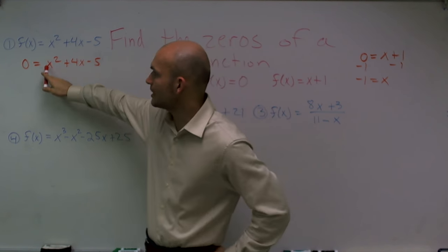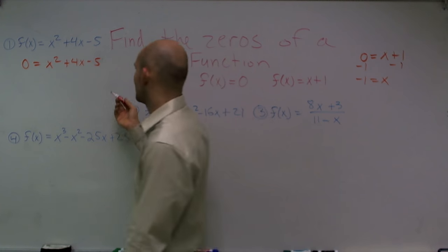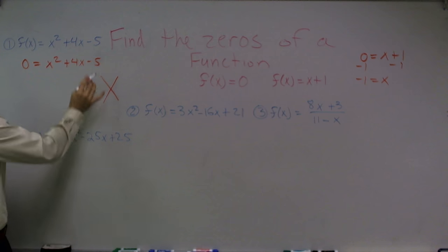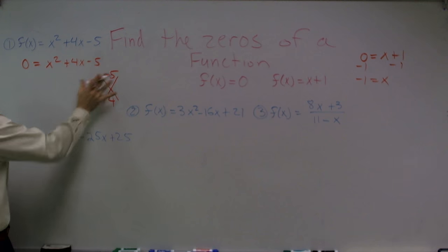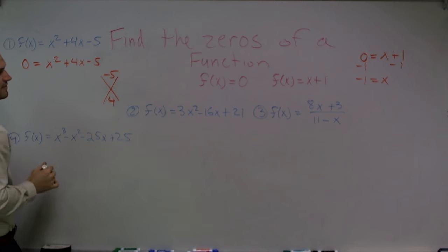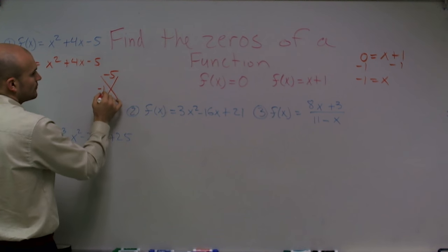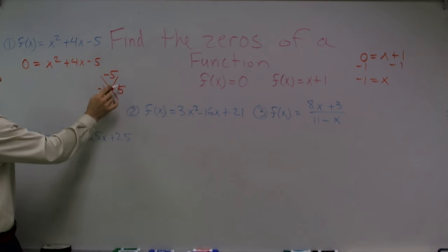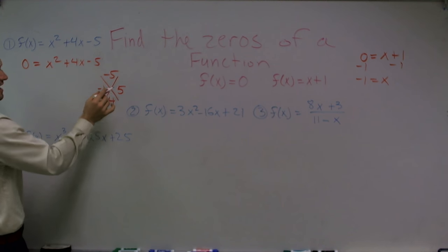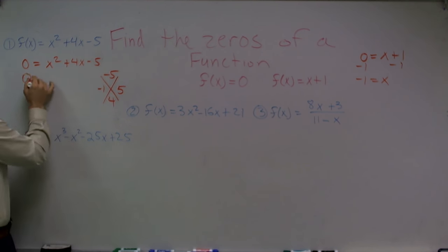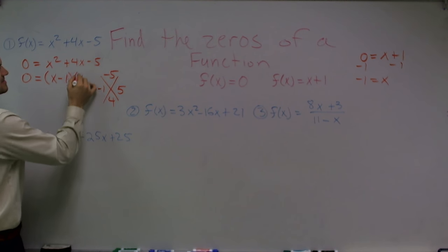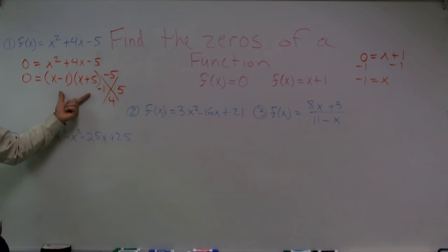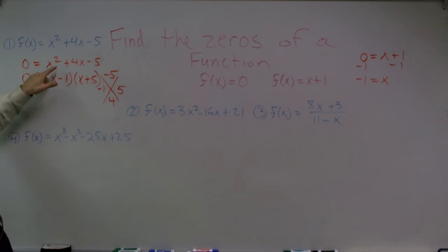To factor when a equals 1, I can use the diamond method. I take my constant, negative 5, and my middle number, 4, and I ask: what two numbers multiply to give me negative 5 but add to give me 4? The answer is negative 1 and 5 — negative 1 times 5 gives negative 5, and negative 1 plus 5 gives 4. So I can write this as two factors: x minus 1 times x plus 5. If you FOIL this out, you get exactly that quadratic again.